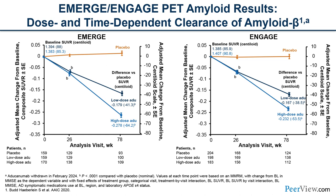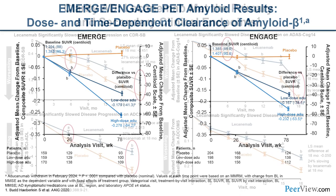Aducanumab, which was withdrawn in January 2024, showed clear amyloid reduction in both the EMERGE and ENGAGE studies — demonstrating excellent target engagement. There were questions about clinical benefits, which contributed to controversies and ultimately to its withdrawal, but it clearly removed amyloid from the brain.